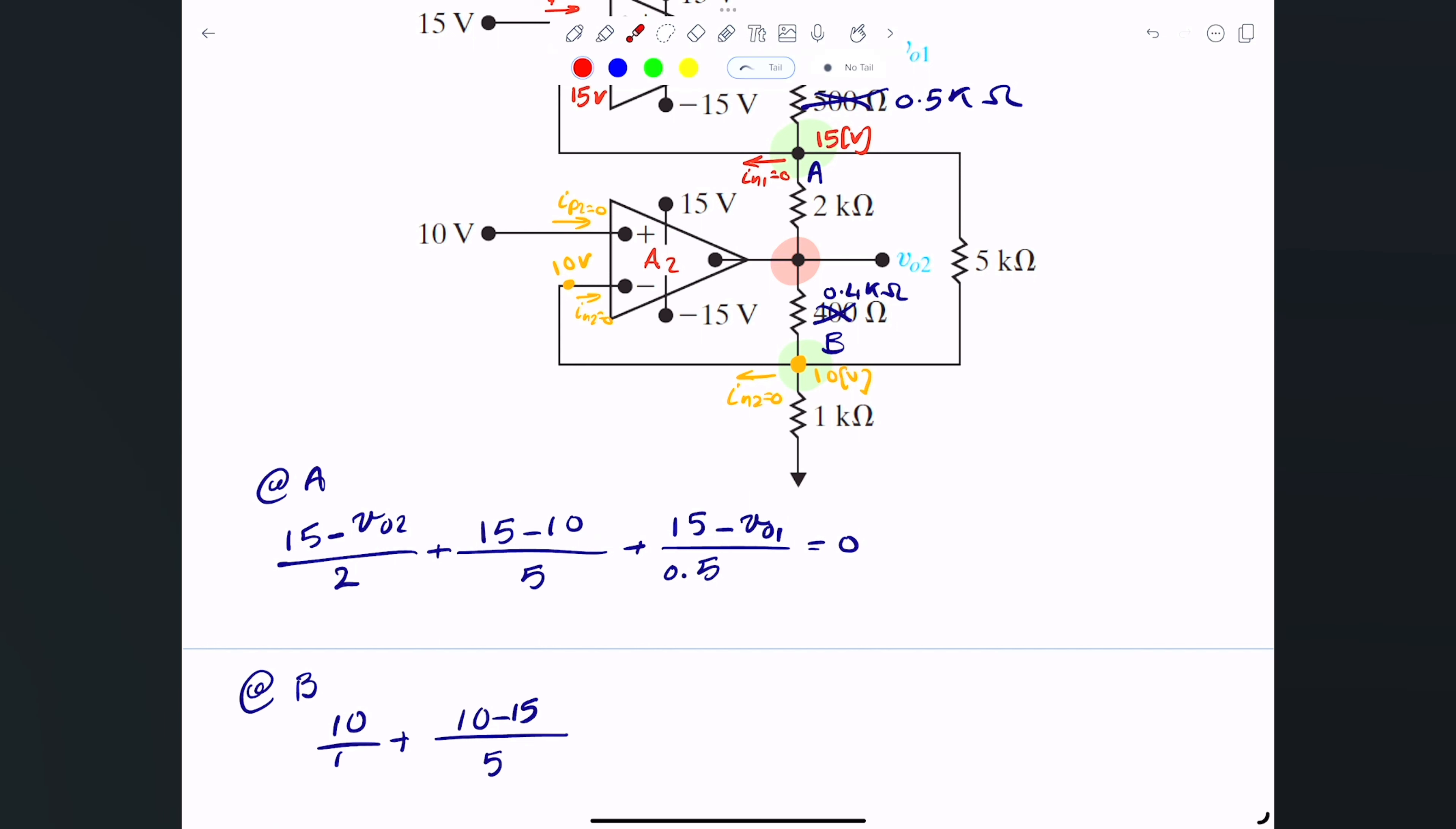What's left? We got this, we got that. Now we have to go the other side here, and that becomes 10 minus V output 2, and that equals zero. I believe I captured everything. This is 1, 2, 3, and 4, and I got 1, 2, 3, and the fourth one is zero.